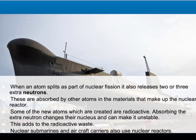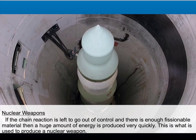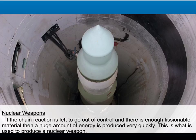Nuclear reactors can be found in other places as well — they work on nuclear submarines and aircraft carriers. In nuclear power plants, the chain reaction is very carefully controlled. In the case of nuclear weapons, the chain reaction is left to go out of control. There is enough fissionable material that a huge amount of energy can be produced and released very quickly. This is why nuclear weapons are so dangerous, because of the vast amounts of energy released at one time.